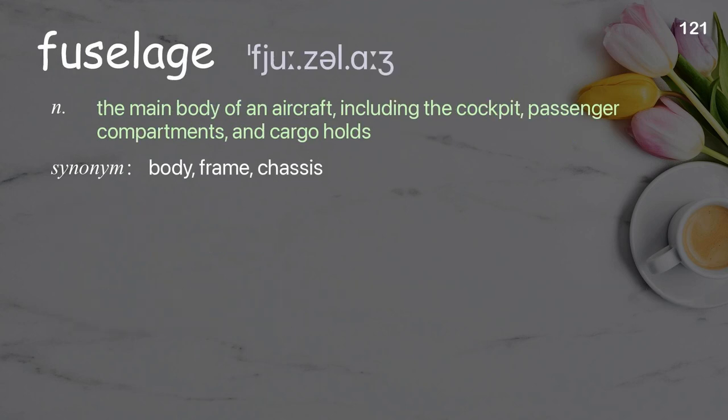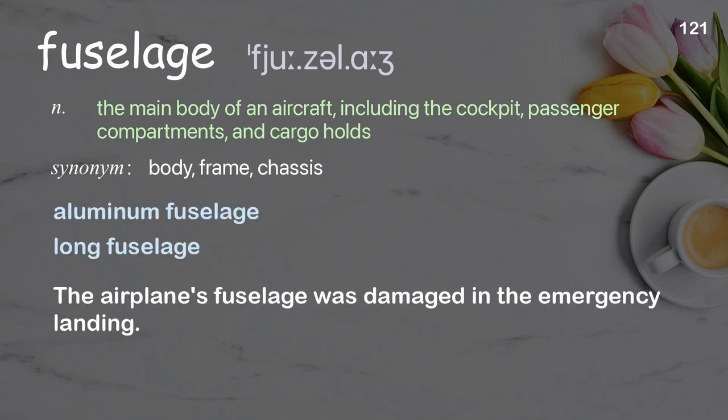Fuselage: the main body of an aircraft, including the cockpit, passenger compartments, and cargo holds. Examples: aluminum fuselage, long fuselage. The airplane's fuselage was damaged in the emergency landing.